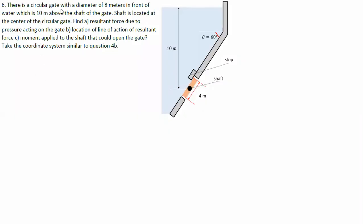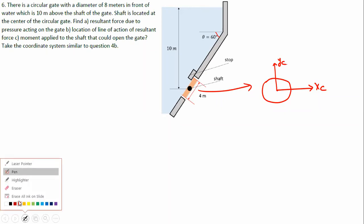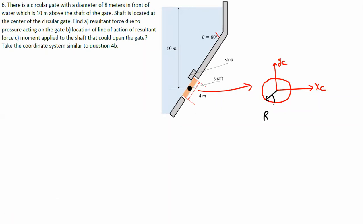The next example: we have a circular gate with a diameter of 8 meters in front of water which is 10 meters above the shaft of the gate. If you look at the cross-sectional view, this is the circular gate - this will be yc and this will be xc. The diameter is 8 meters, so it has a radius of 4 meters. The water is 10 meters above the shaft, measured from the centroid of the gate.